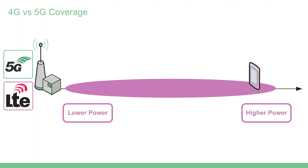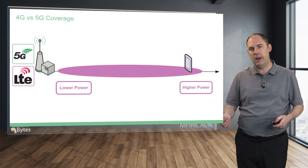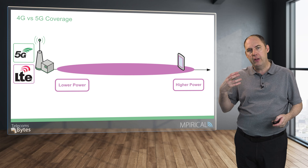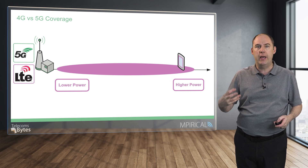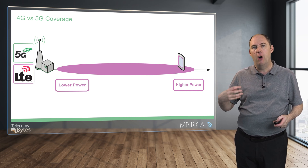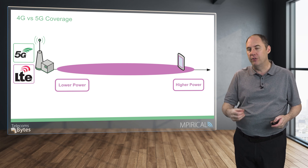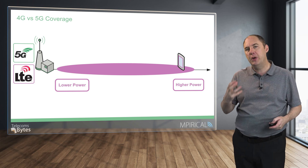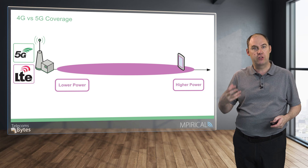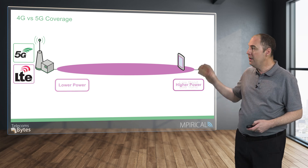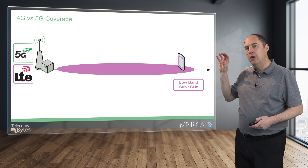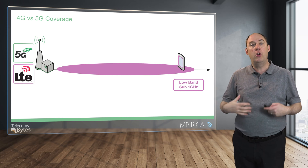So high-powered cells go further. But it's not just about that. When comparing the coverage, we need to think about whether 4G and 5G are operating on the same power levels. We also need to think about the frequency of deployment when describing coverage. Typically, the low frequencies go further, and the terminology we use is low band, typically identified below 1 GHz.